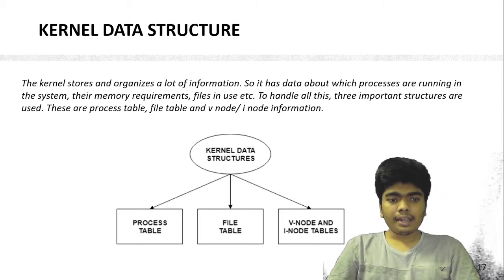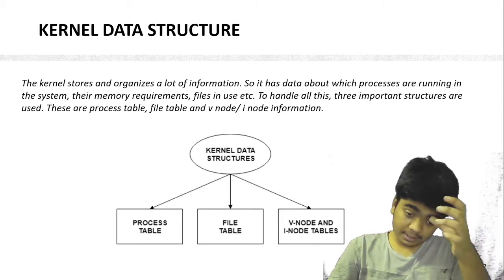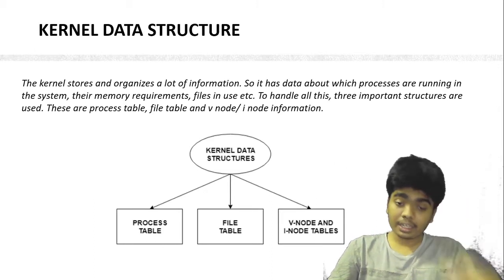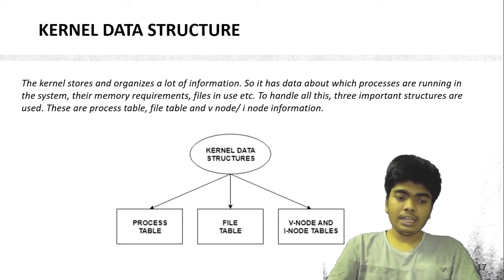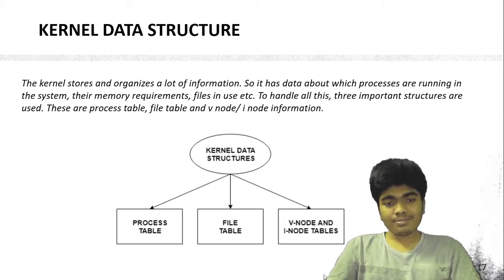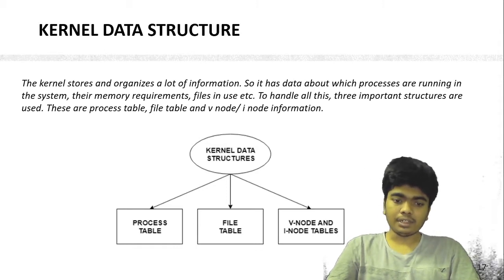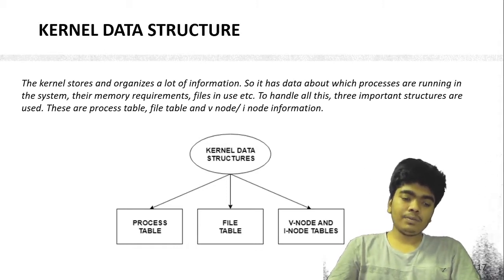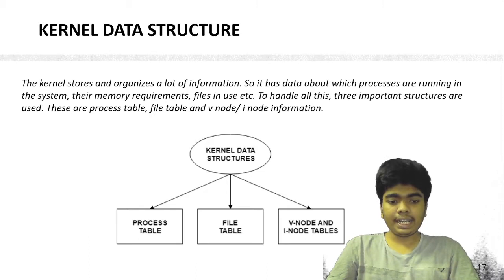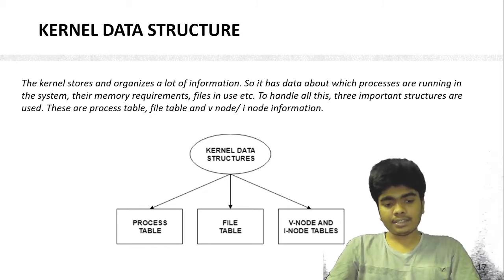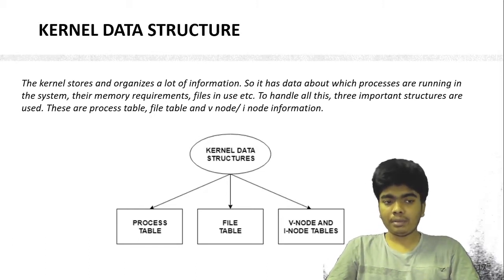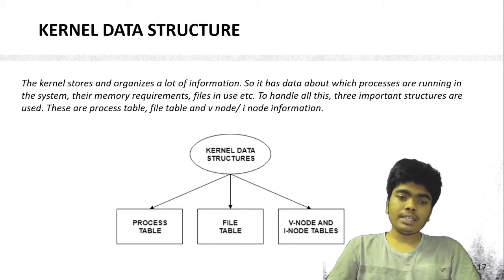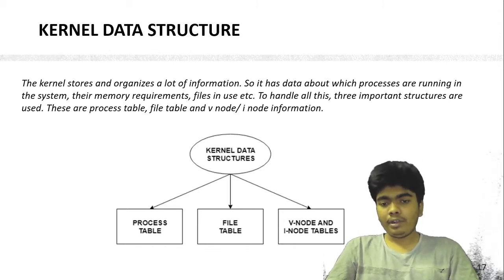The kernel gets lots of processors and also many programs to run. A lot of programs running in the same state creates confusion, so the kernel has three types of tables where it stores data: the process table, file table, and V-node and I-node table.